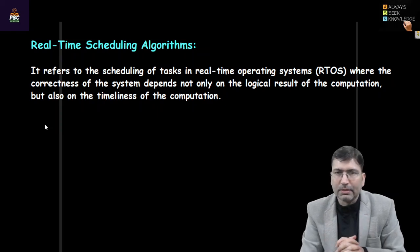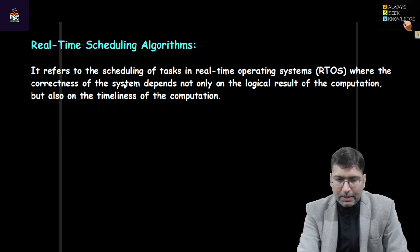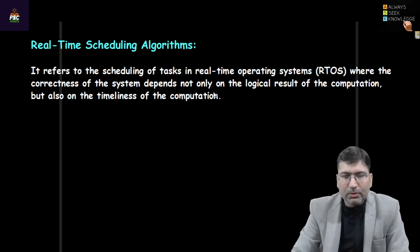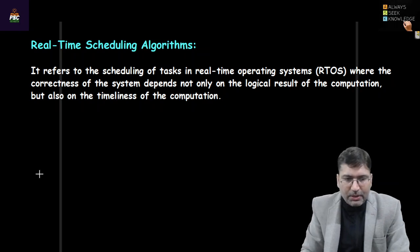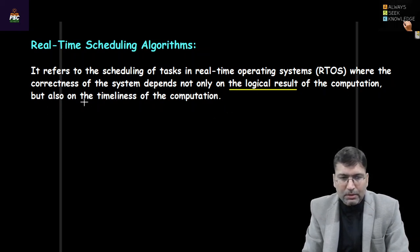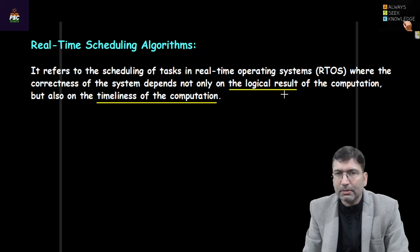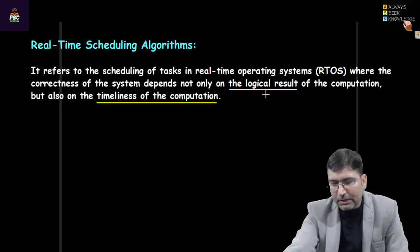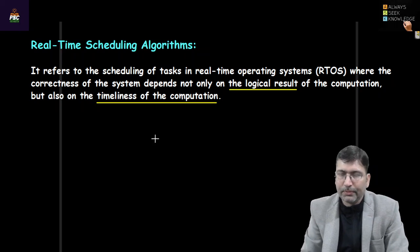Real-time scheduling refers to scheduling tasks in a real-time operating system where the correctness of the system depends on two things: the result must be correct — the logical result we are expecting — and apart from this, the computation must also meet its timeline. Whatever computation the program is doing, it needs to be correct and must meet the deadline; only then will the task be considered successfully executed.